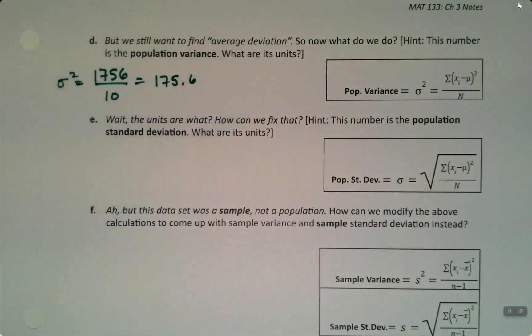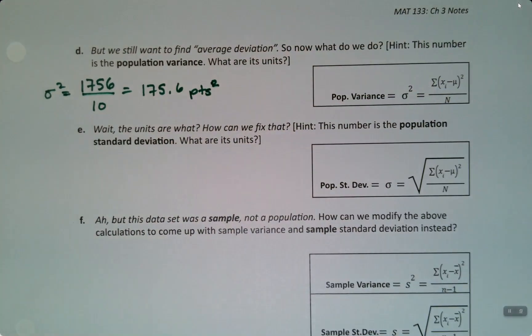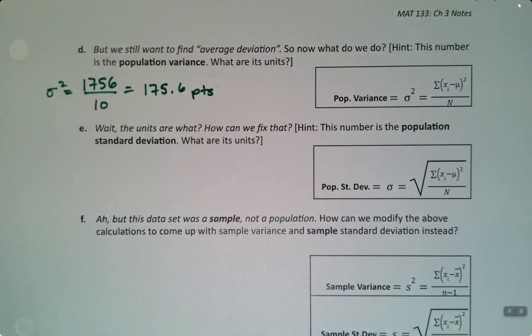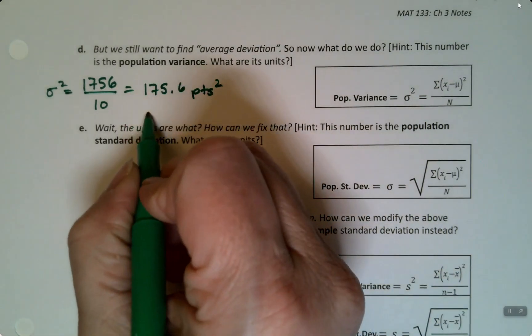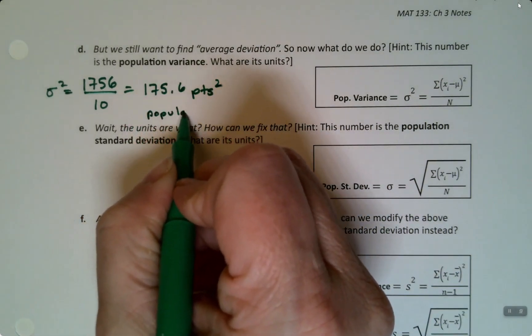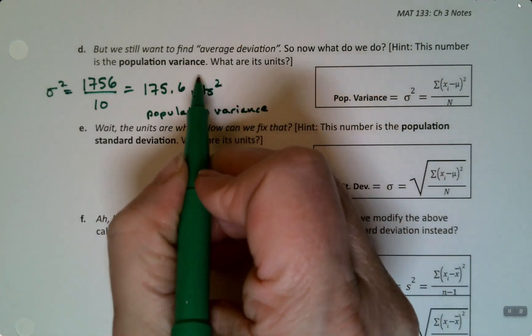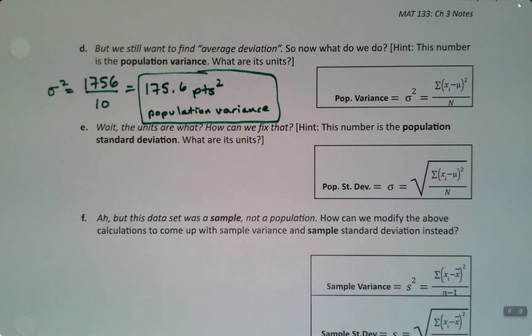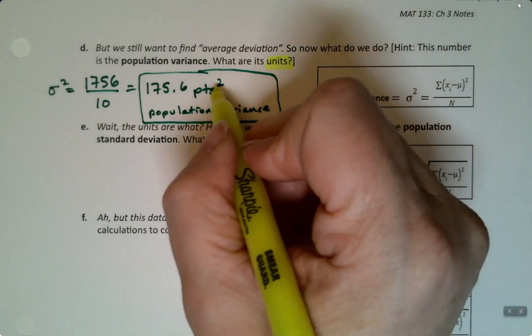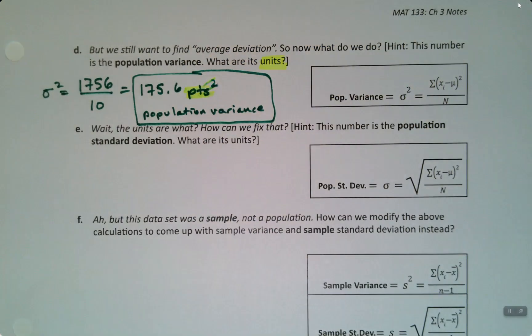If you're thinking that doesn't have any meaning, exactly. That's why we don't generally use variance very much in a first level class. We kind of talk about it so you can see it and know where it comes from. It does measure dispersion, but its units are kind of useless for us. So that's the population variance, and the units are points squared.